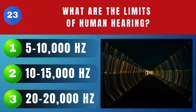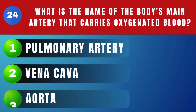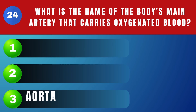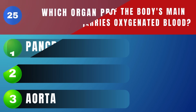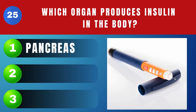What are the limits of human hearing? From 20 hertz to 20 kilohertz. What is the name of the body's main artery that carries oxygenated blood? Aorta artery. Which organ produces insulin in the body? Pancreas.